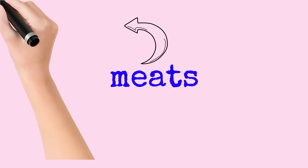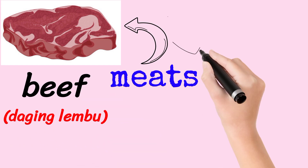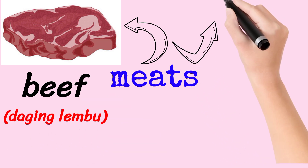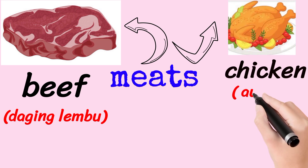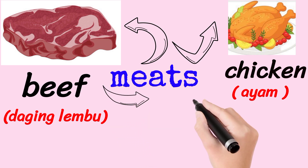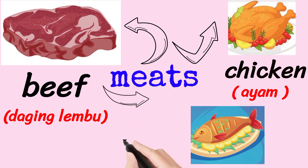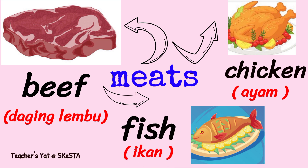The final type of food is meat — daging. For example, beef (daging lembu), chicken (ayam), and fish (ikan). Meat contains protein that keeps our body stronger.